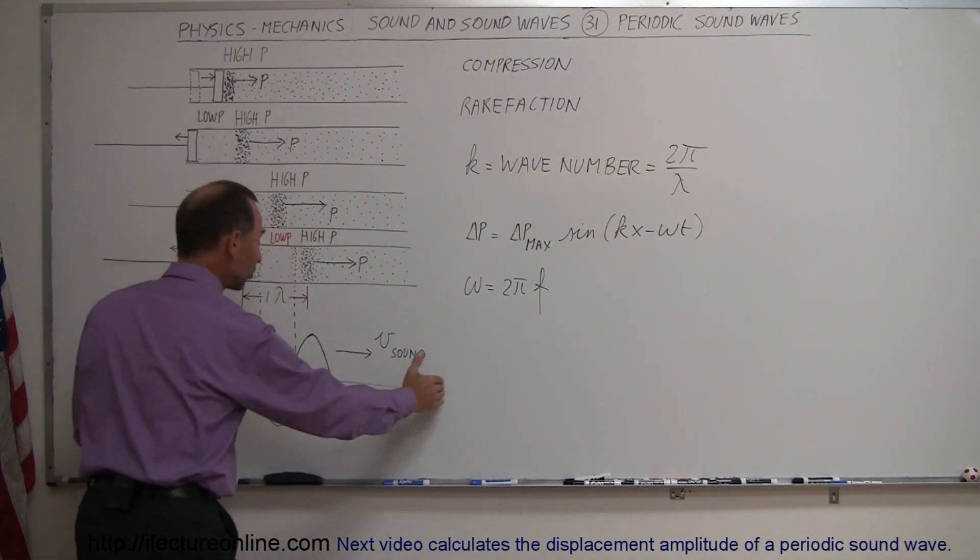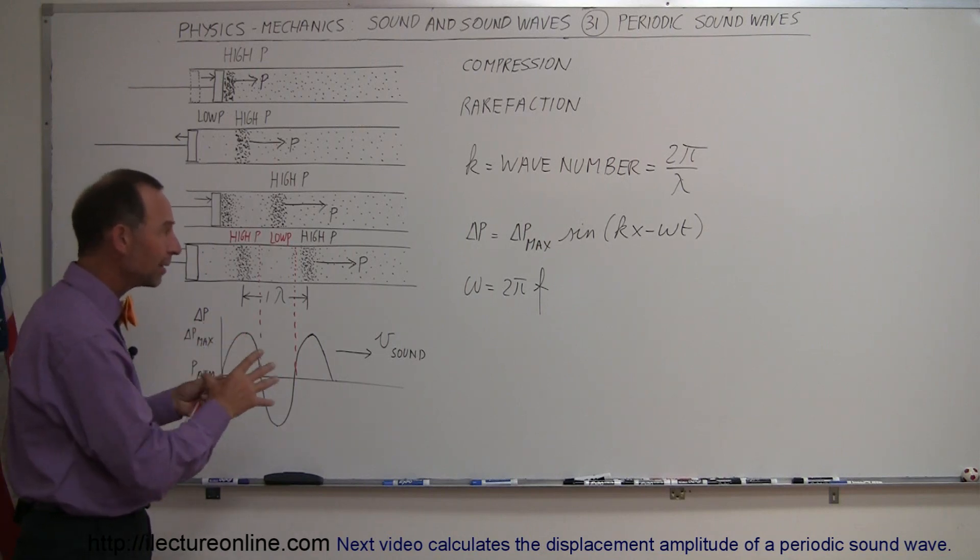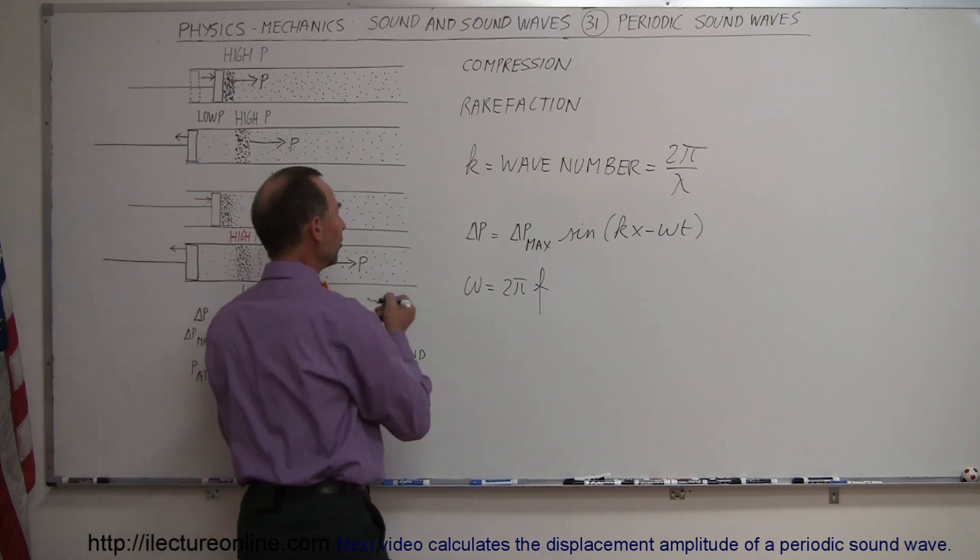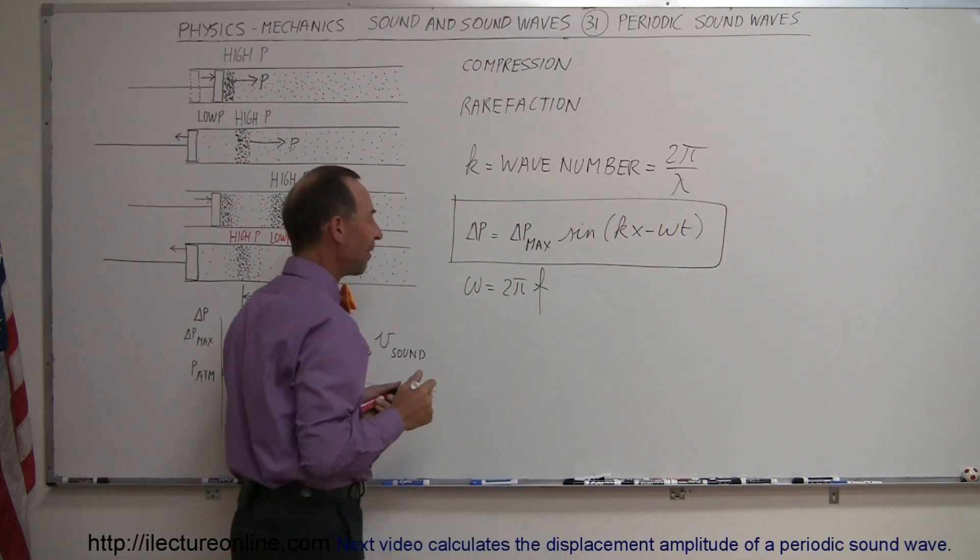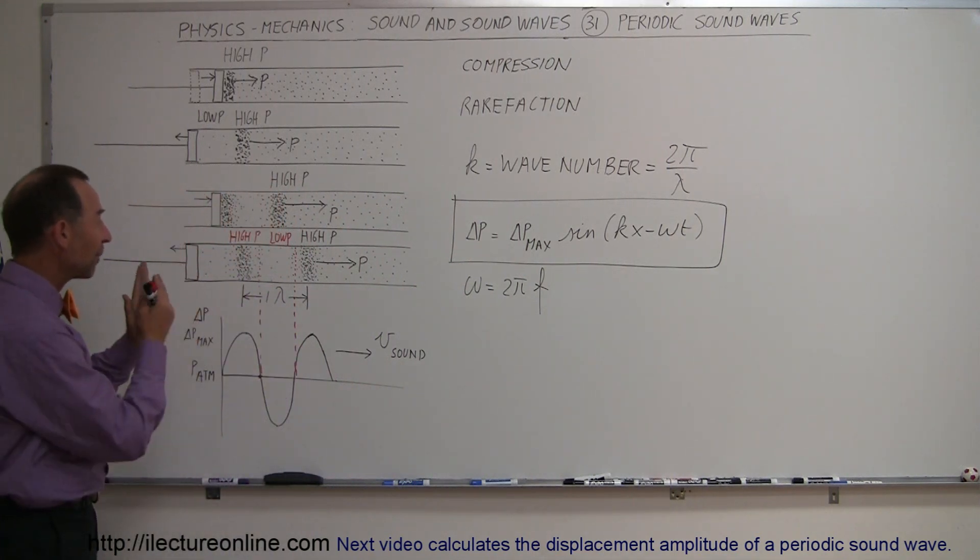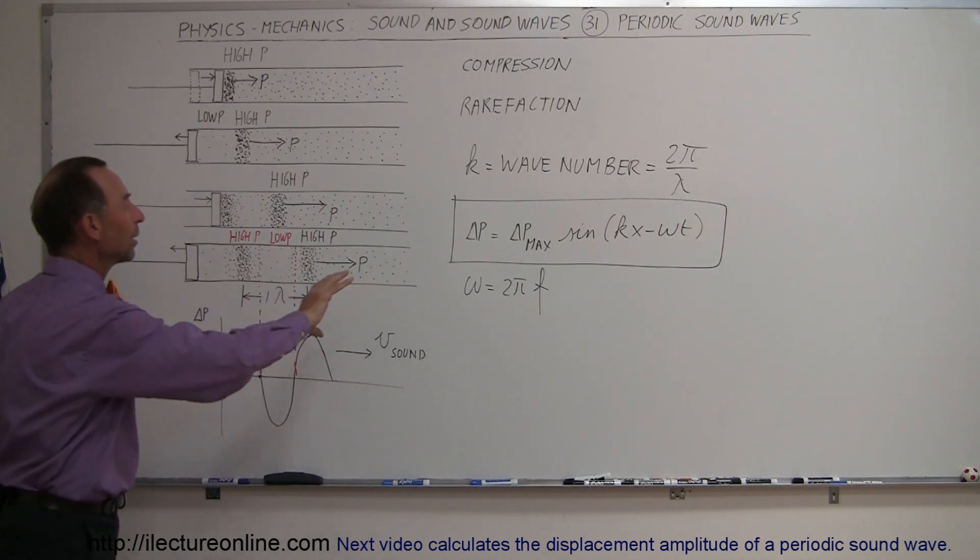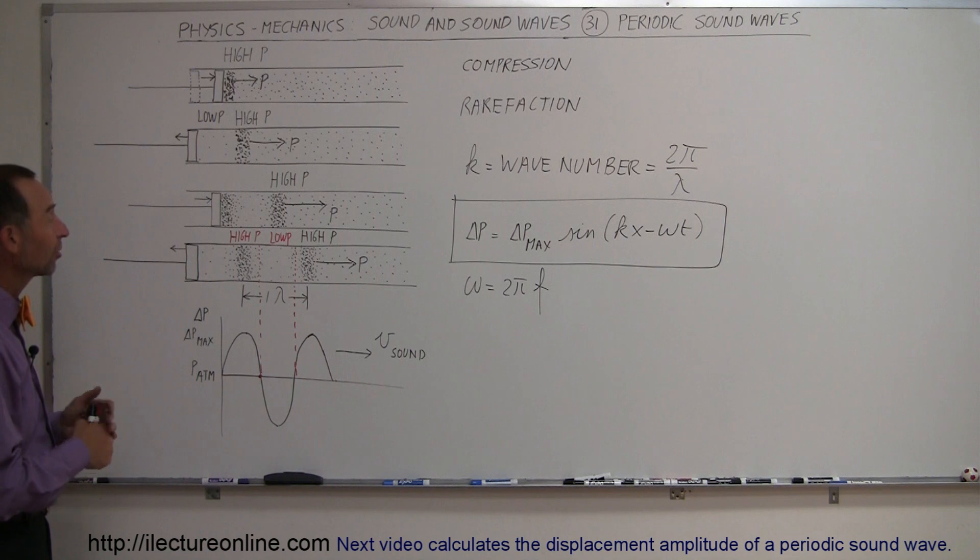This describes the pressure as a function of position in the x-direction and as a function of time combined. This represents the wave equation that defines the pressure variation in a sound wave, which is caused by something vibrating and making those compressions one after the other, which then move through the air at the speed of sound. That's how you can define periodic sound waves caused by a vibrating object.